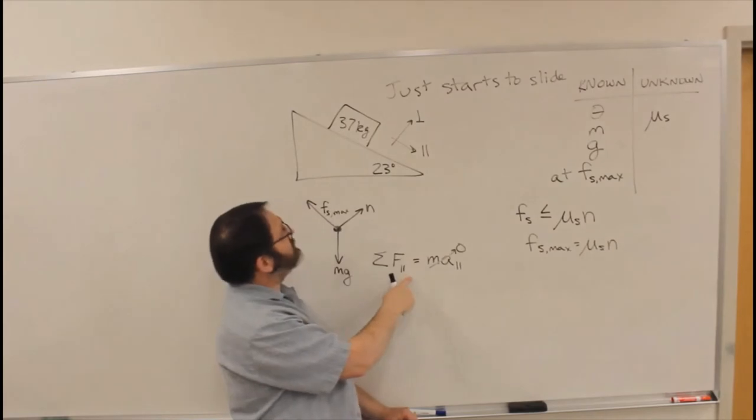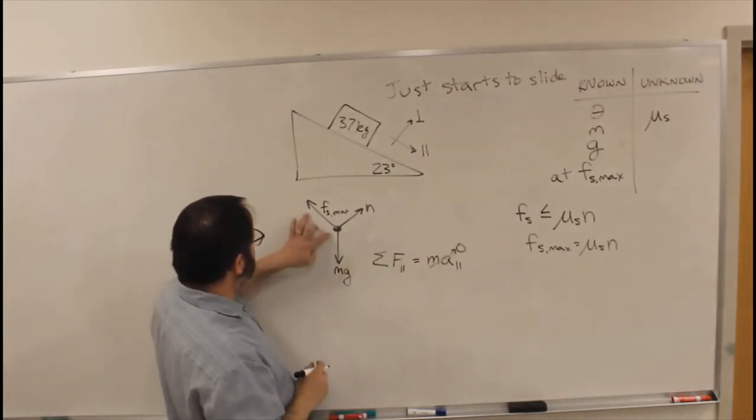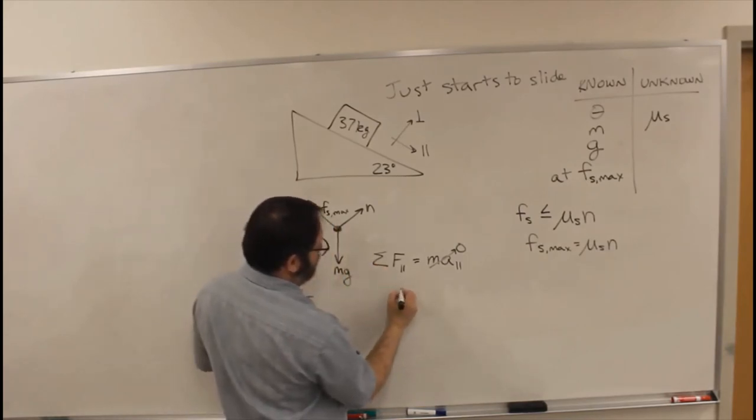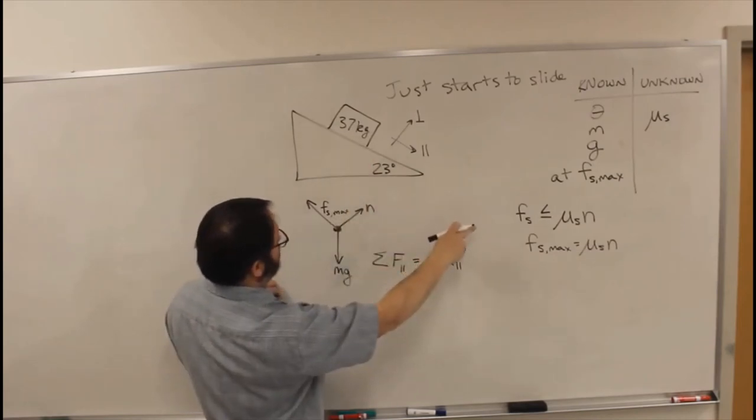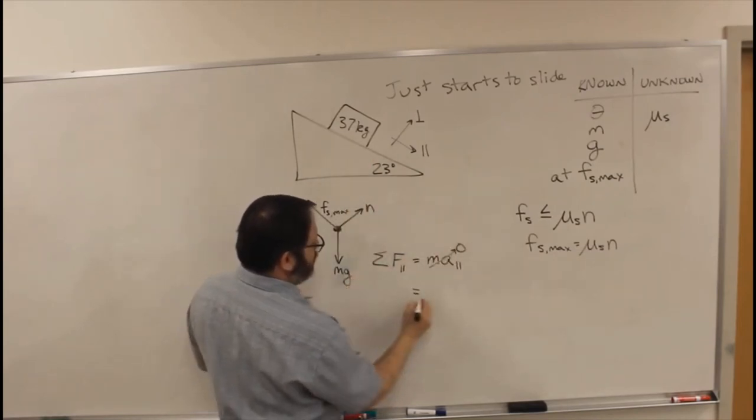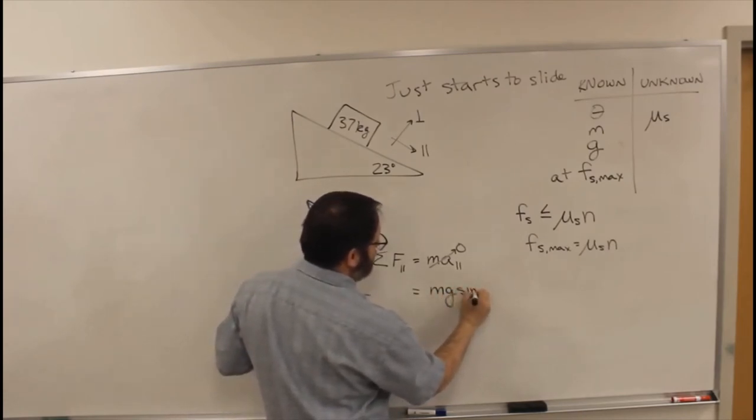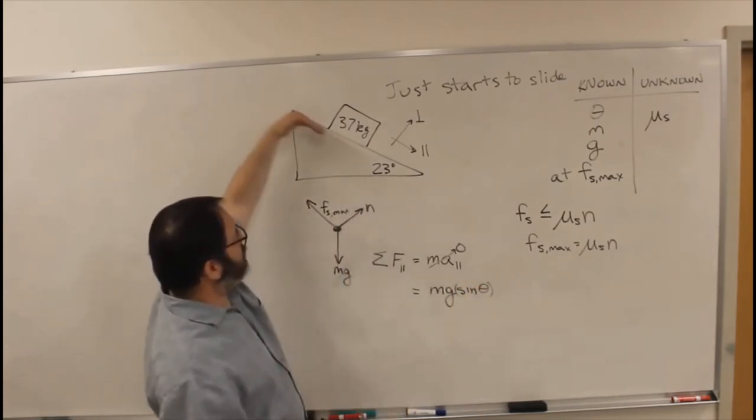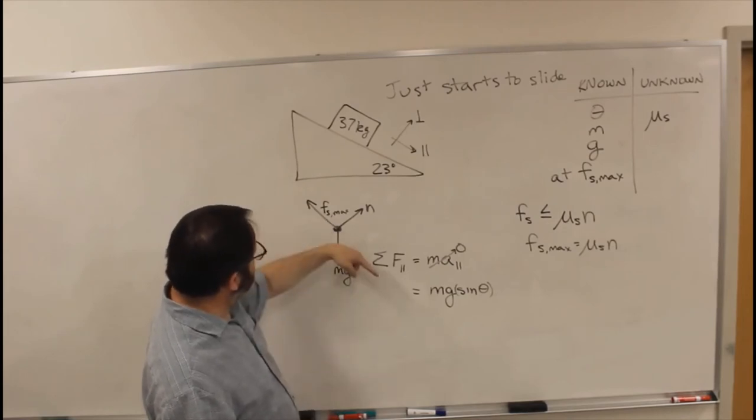So the sum of forces in this direction has to be zero. So that would be, this is the parallel direction. So sum of forces, that is, if this is the positive direction, we've got part of mg, mg times sine of theta in that parallel direction. So that's the component of mg pointed that way.